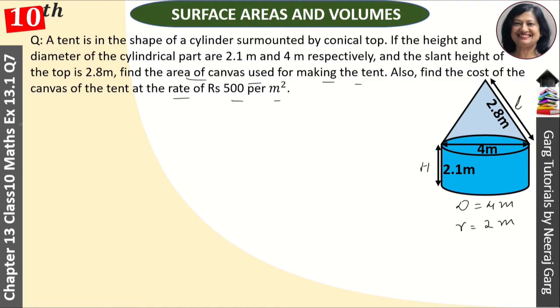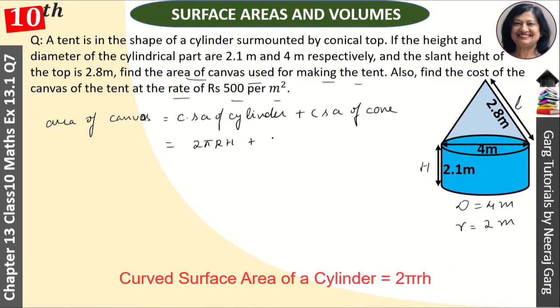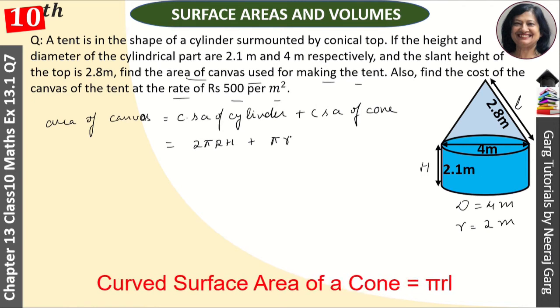And the area of canvas, that is equal to CSA of cylinder plus CSA of cone. Curved surface area of cylinder ka formula hota hai 2 pi r h. Plus, cone ka hota hai formula pi r l.